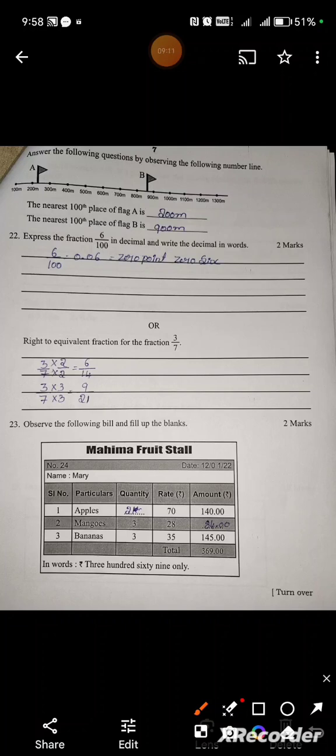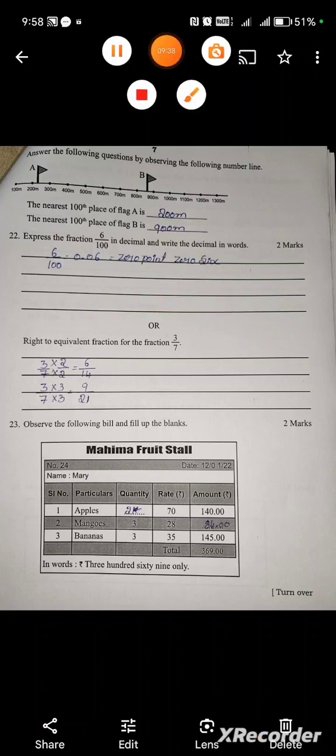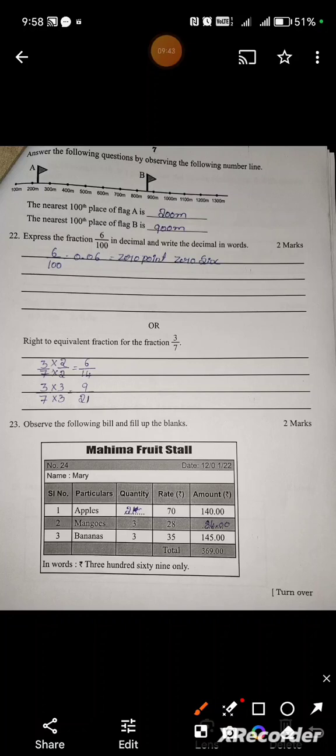Express the fraction 6 by 100 in decimal and write the decimal in words. 6 by 100 means 0.06 in decimal form. Same thing we are writing in words: zero point zero six.